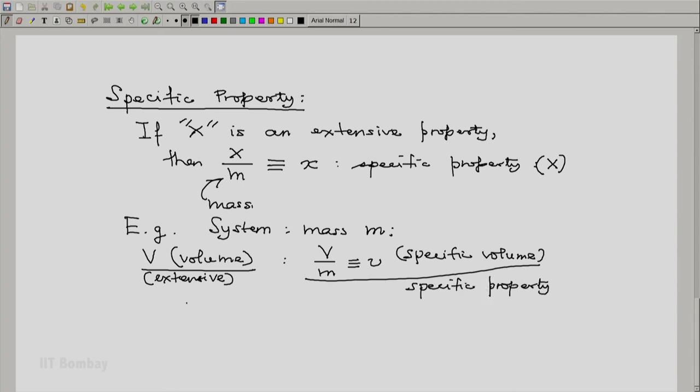Similarly, we could take energy, enthalpy, entropy. These are extensive properties. But energy per unit mass or specific energy, enthalpy per unit mass or specific enthalpy, and entropy per unit mass, which is specific entropy, are all specific properties.